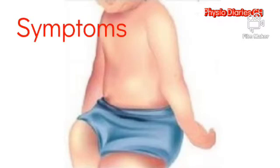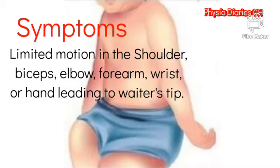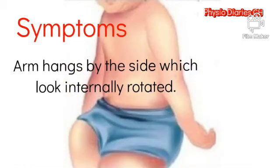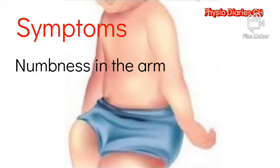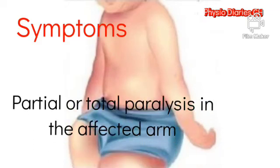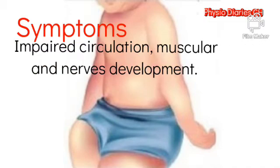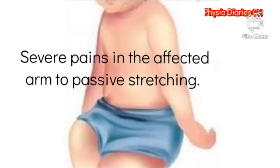The presentation involves limited motion in the shoulder, biceps, elbow, forearm, wrist, or hand, leading to the waiter's tip presentation. There is also the arm hanging by the child's side internally rotated, decreased grip strength in the hand, numbness in the arm, and partial or total paralysis of the affected arm. There is also impaired circulation, muscular and nerve development, and severe pain mostly during passive stretching.